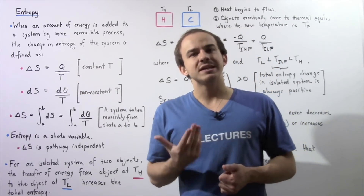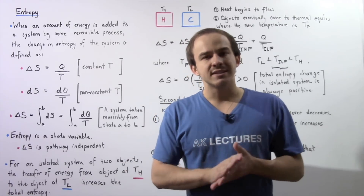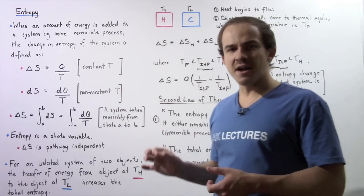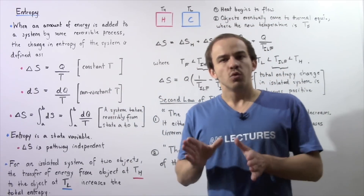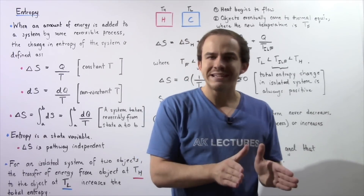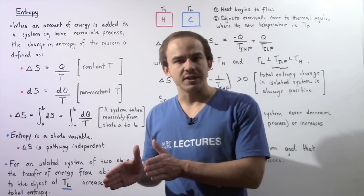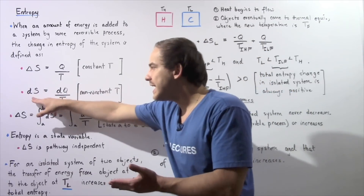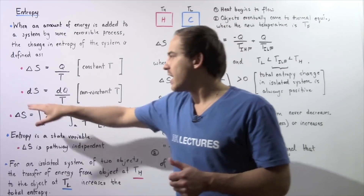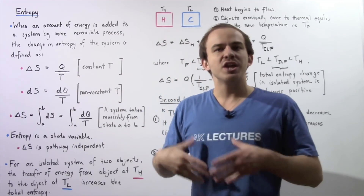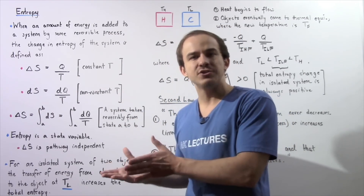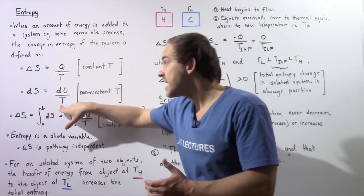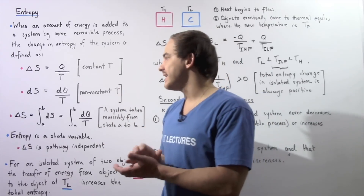Now, what happens if the temperature during the process is not constant? If we're dealing with a non-constant temperature, that means we have to talk about infinitely small changes in our entropy. So at that particular moment in time, the infinitely small change in our entropy given by dS is equal to the infinitely small change in our energy that flows into our system divided by the temperature at that instant in time.